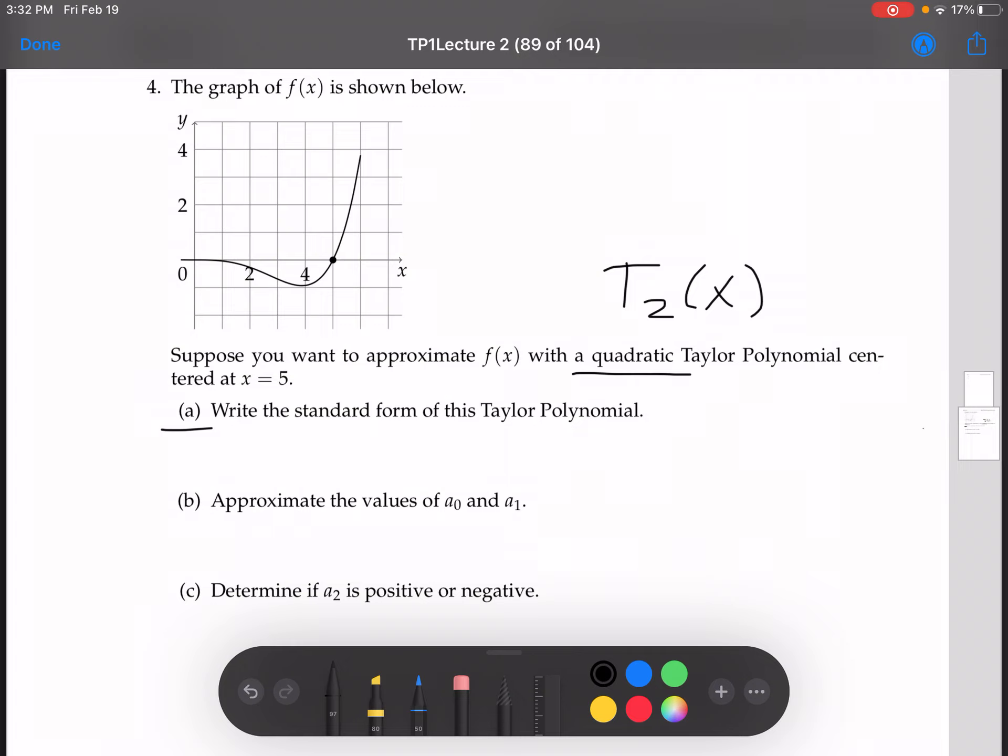And so to do part A here, to start, we can just write out the general form of t2 of x. t2 of x looks like a0 plus a1 times x minus c, plus a2 times x minus c squared. Remember that c is the center. And now, since we're given that it's centered at x equals 5, we know that the center c is 5. So we can just plug that 5 in there. And that's all we've got to do for part A.